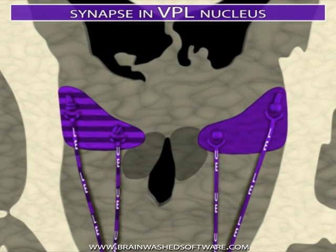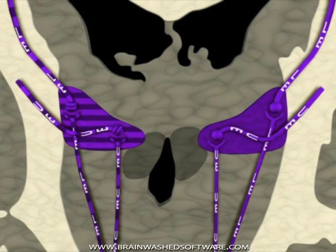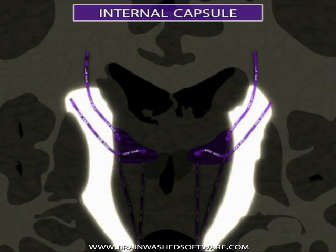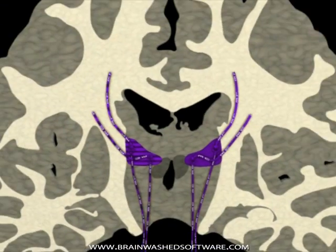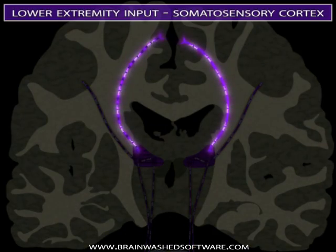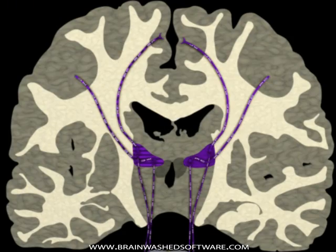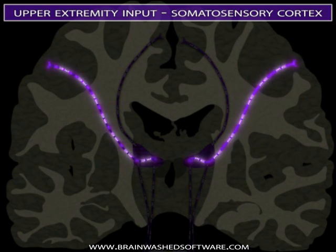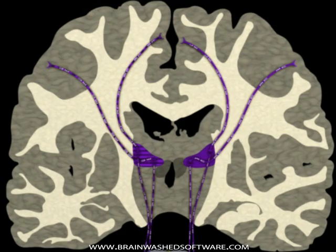The axons of the third-order neurons in the VPL travel through a white matter area of the forebrain called the internal capsule and terminate in the primary somatosensory cortex of the postcentral gyrus. Somatotopy for discriminatory tactile information and conscious proprioception is maintained in the primary somatosensory cortex.